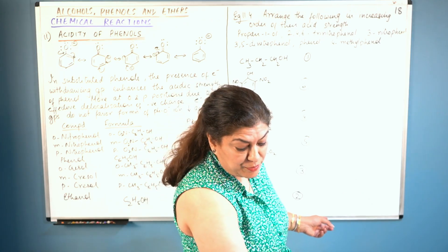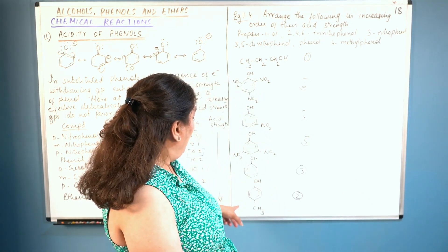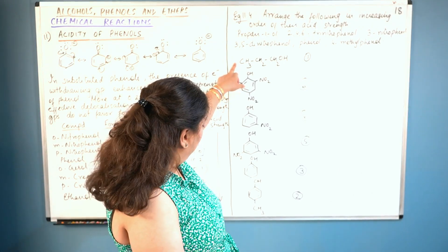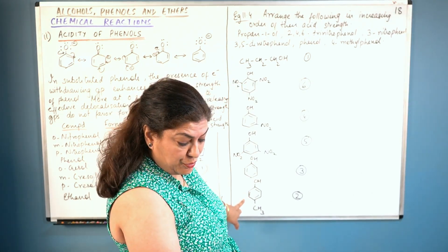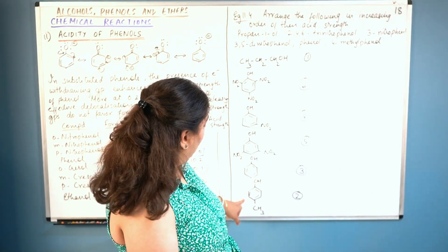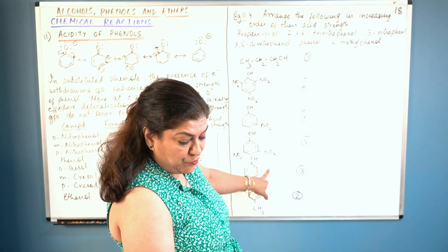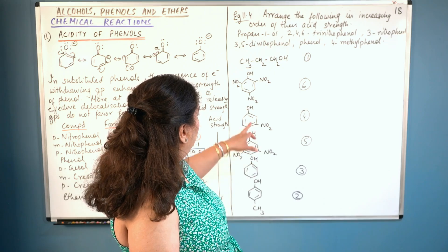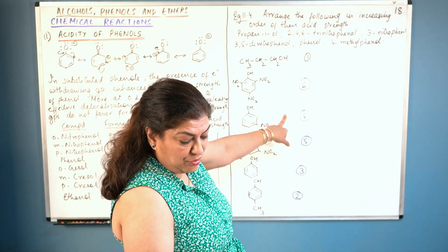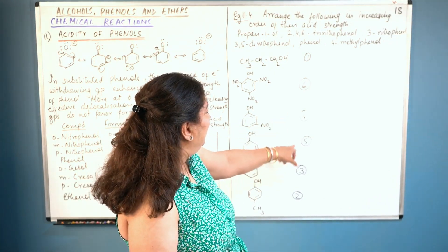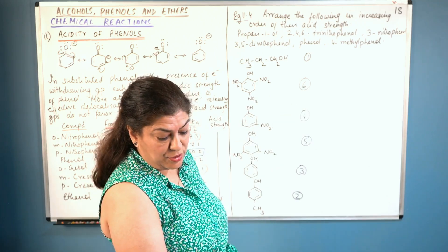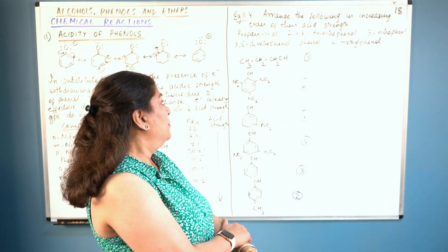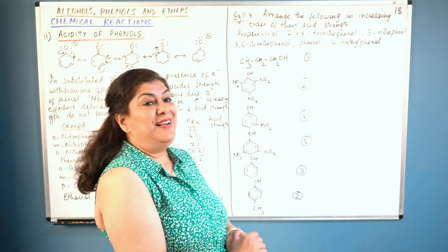Let me confirm the order: propane-1-ol is first (least acidic), 4-methylphenol is second, phenol is third, 3-nitrophenol is fourth, 3,5-dinitrophenol is fifth, and 2,4,6-trinitrophenol is the most acidic.